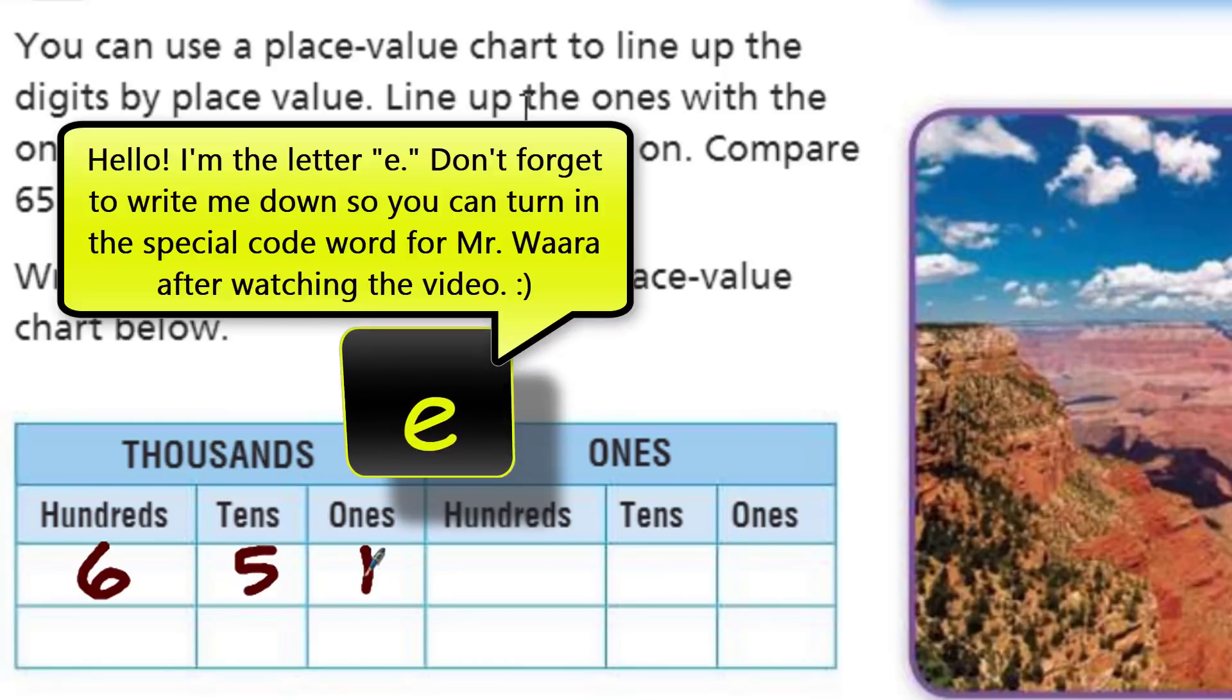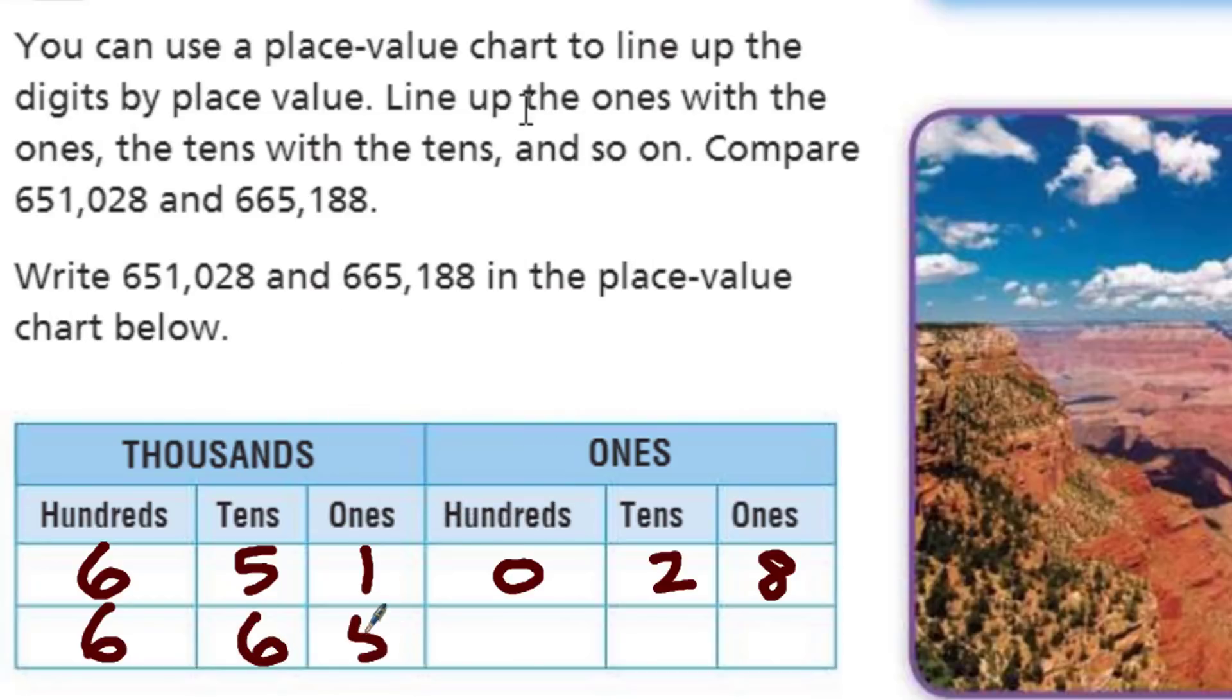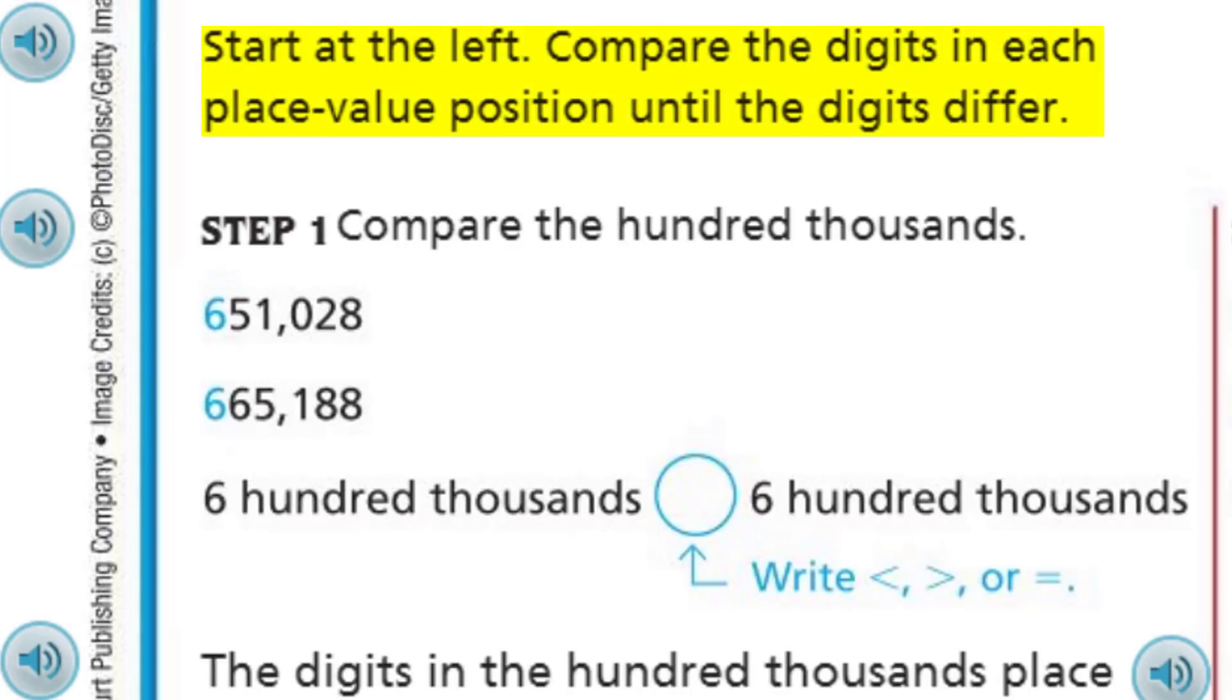It says here you can use a place value chart to line up the digits by place value. Line up the ones with the ones, the tens with the tens, and so on. Compare 651,028 and 665,188. Let's do that. 651,028, and then 665,188.